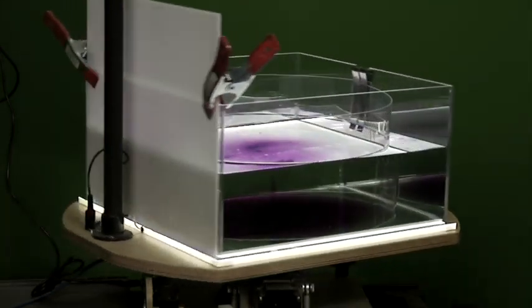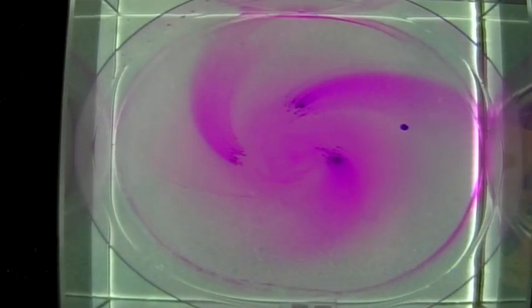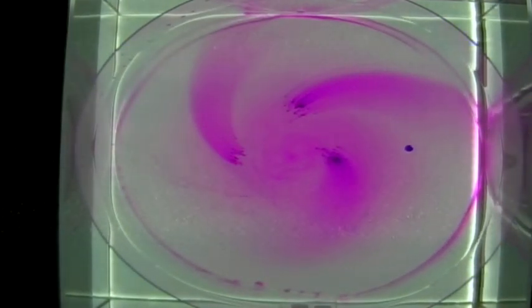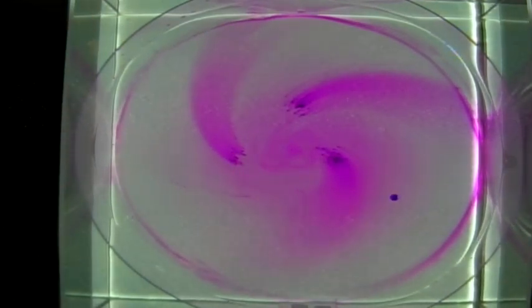This is because now with the effective friction reducing the speed of that anticyclonic flow at the surface, again, that weakens the strength of the Coriolis. It's not able to fully balance the pressure gradient, and we have flow flowing down the pressure gradient away from the high pressure at the center of the tank.